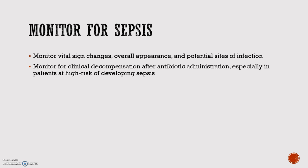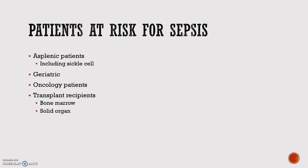When evaluating a patient with fever, include all the components for proper assessment. Pay close attention to the vital signs, overall toxic appearance, and the potential sites of infection. Closely monitor for clinical decompensation after antibiotic administration, particularly in patients at high risk for developing sepsis. Immunocompromised patients at risk for sepsis include asplenic individuals, patients with sickle cell anemia, geriatric patients, oncology patients, and transplant recipients. It is important to identify that most chemotherapy agents result in a drop in WBCs and therefore their ability to fight off infection for approximately 10 days after therapy.